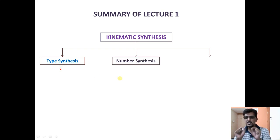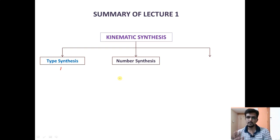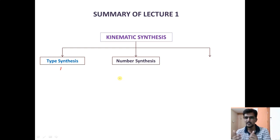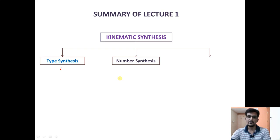The second phase is number synthesis, where I find out how many links are required for smooth functioning of the mechanism. Smooth functioning is identified through the degrees of freedom, which we find using Grubler's criteria. If the degree of freedom is equal to zero, the system is locked and cannot move. The number of links should be such that the degrees of freedom equal one or more.